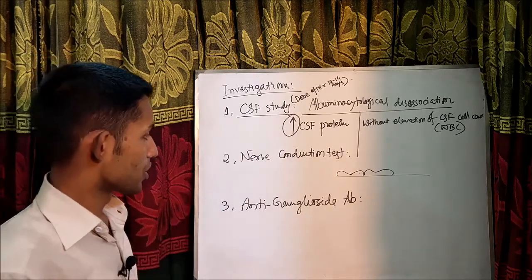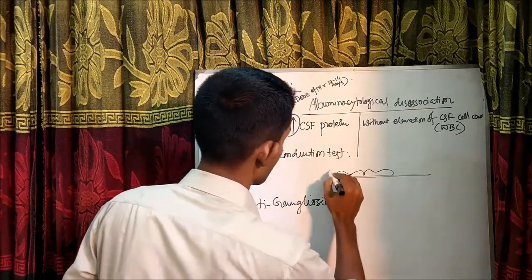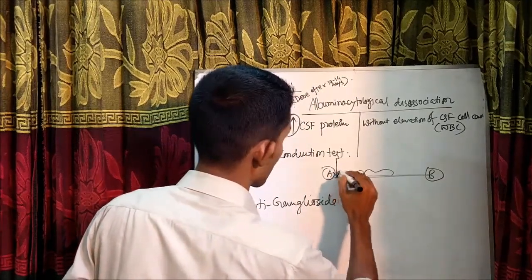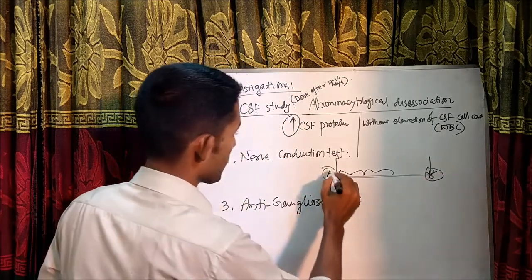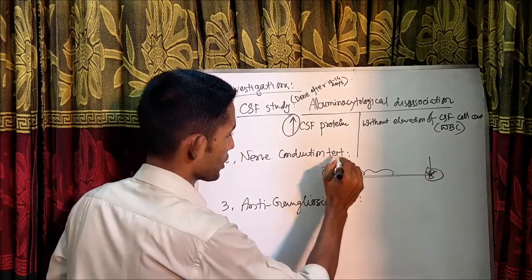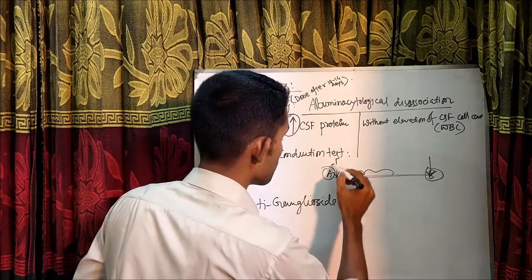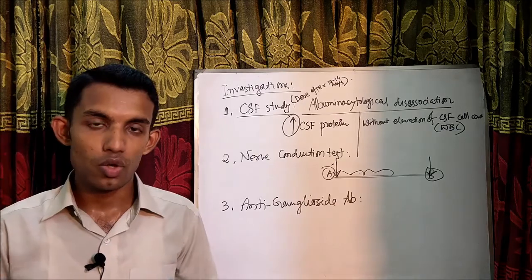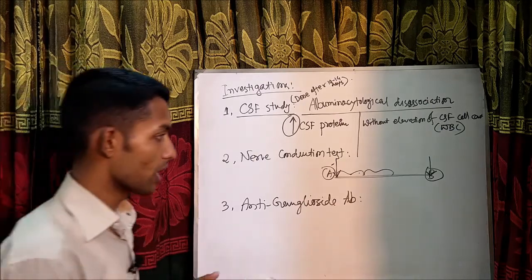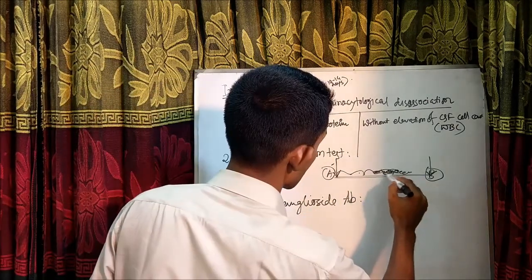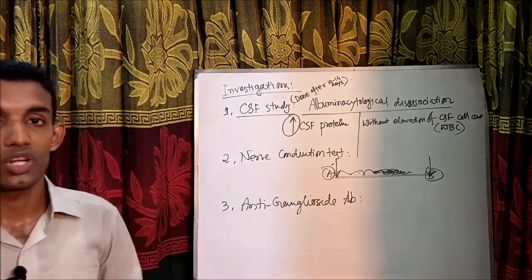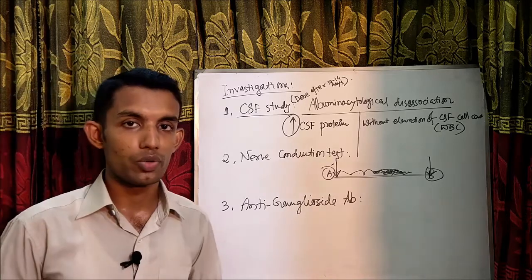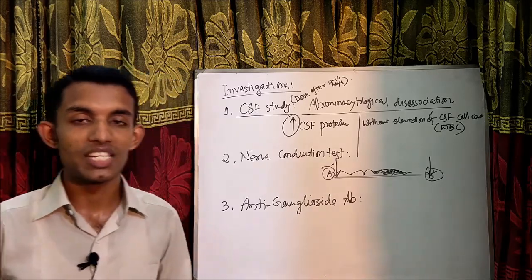The second investigation is the nerve conduction test. A needle is placed at point A and another at point B along a nerve. When point A is stimulated, the time for the impulse to reach point B is recorded. If the time is increased, it means nerve conduction is slowed — because of destruction of the myelin fiber. We may also find anti-ganglioside antibodies such as anti-GM1.